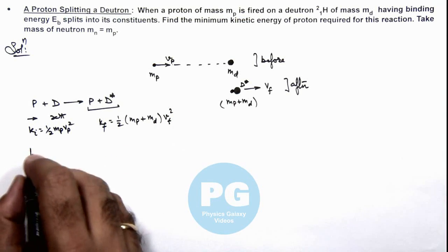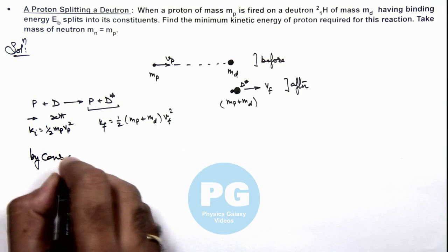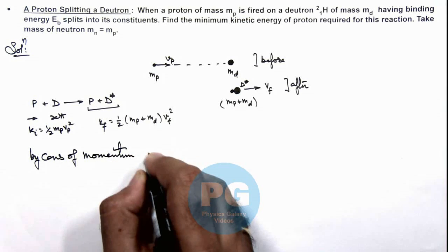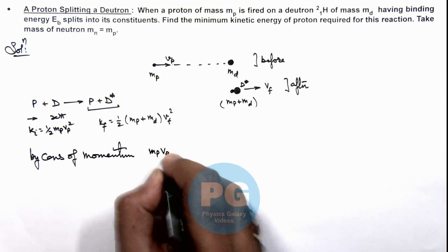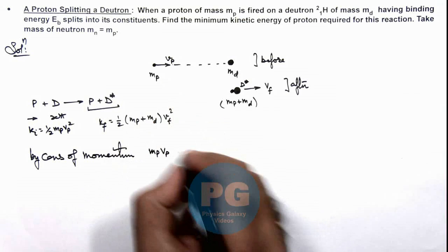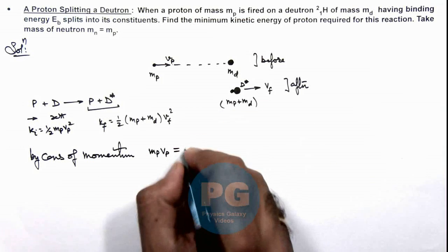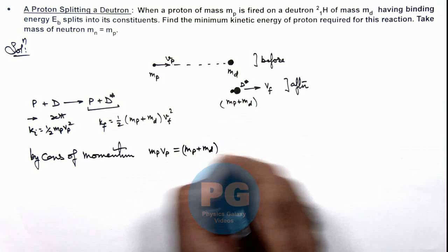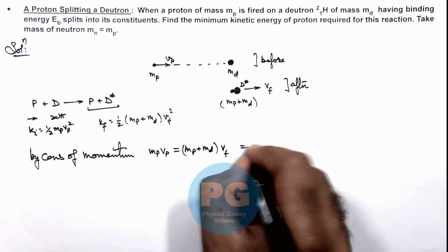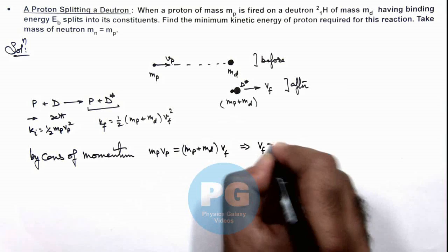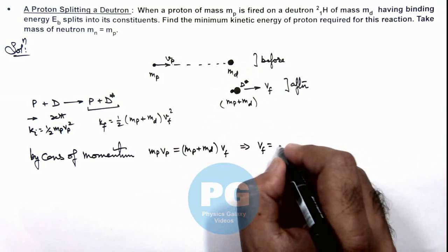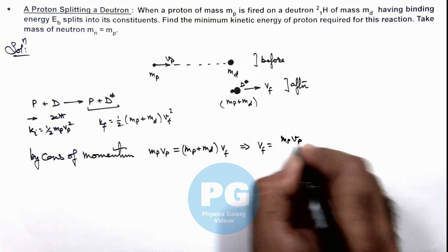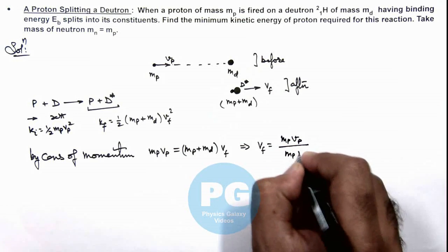By conservation of momentum, we can write mp vp as the initial momentum of the proton, which should be equal to the final momentum (mp plus md) multiplied by vf. This gives us the value of the final speed: vf equals mp vp divided by (mp plus md).